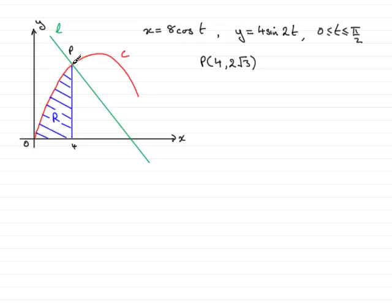We're also given this point P on the curve which has coordinates (4, 2√3) and asked to find the value of t at the point P. So how do we do this?